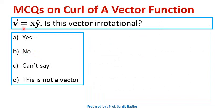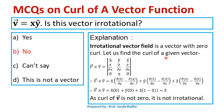Next question: V̄ = xŷ. Is this vector irrotational? Options are yes, no, can't say, this is not a vector. When curl of a vector is 0, such a vector is called an irrotational vector. To determine whether the given vector is irrotational, we need to find curl of this vector. The curl of V̄ can be found by solving the determinant where the first row is unit vectors, second row is components of the del operator, and third row is components of the given vector. The x-component is 0, y-component is x, and z-component is 0.